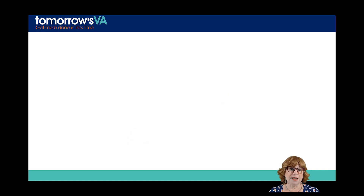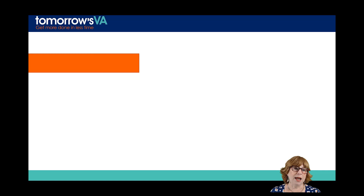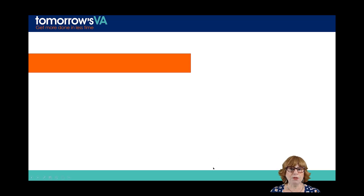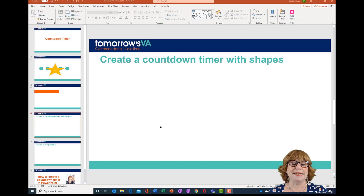The next slide has a 15 or 20 second timer on it — this is a progress bar. It's a shape animated to take however long I want it to go, and then it will stop. I'm going to show you how to create both of those in the next couple of segments.